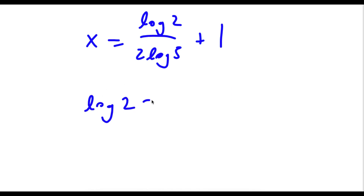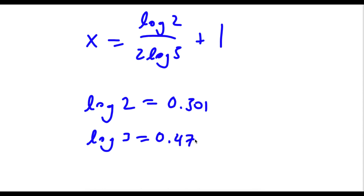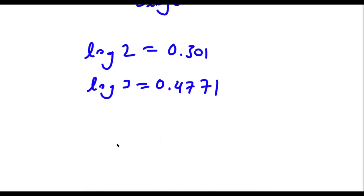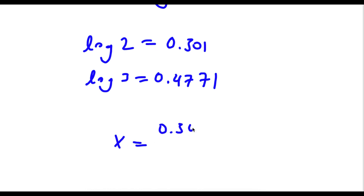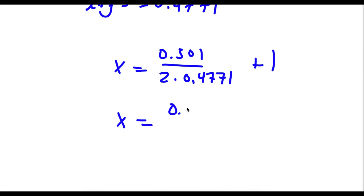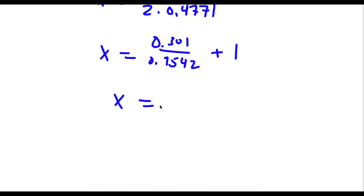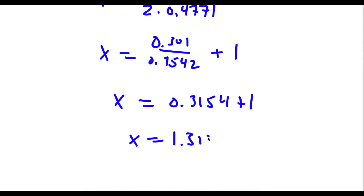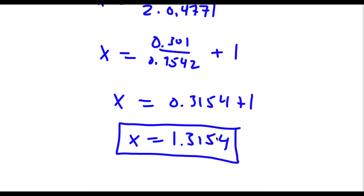Now log 2 is equal to 0.301 and log 3 is equal to 0.4771. So now I have x is equal to 0.301 over 2 times 0.4771, plus 1. This is equal to 0.301 over 0.9542 plus 1, which equals 0.3154 plus 1, which is equal to 1.3154. So this is our answer.